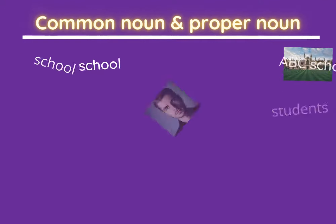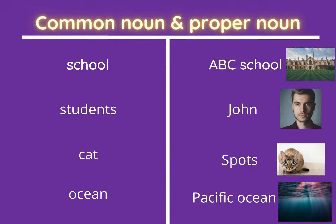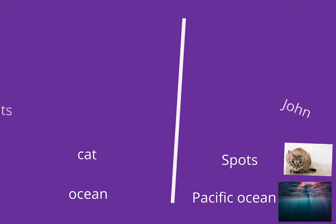Now let us see some examples. When I say school in general, it is a common noun. But when I mention one particular school, it is a proper noun. When I say students in general, it is a common noun; when I say one particular student, it is a proper noun. When I say cats in general, it is a common noun; if I say one particular cat like Tom or Spots, it is a proper noun. When I say ocean, it is a common noun; if I say one particular ocean like Pacific Ocean or Atlantic Ocean, it is a proper noun.